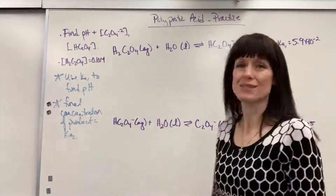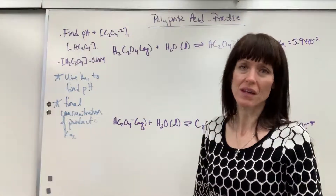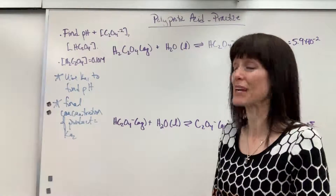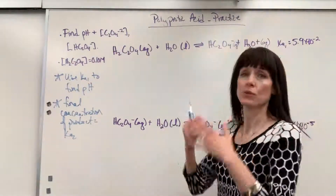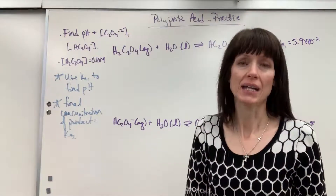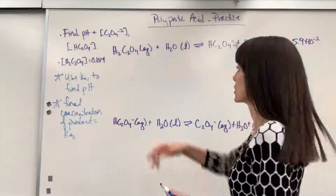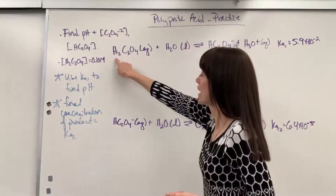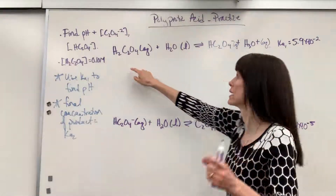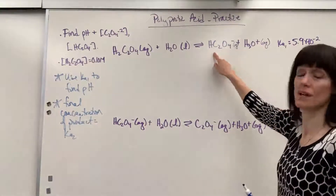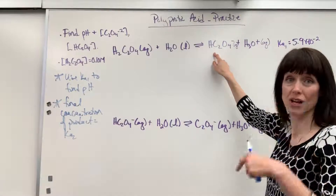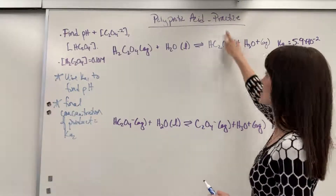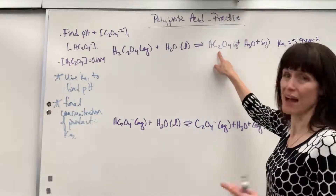Let's start with our ICE table. With polyprotic acids — this is a diprotic since it's losing two hydrogens — they lose hydrogens one at a time, and each hydrogen does its own chemical reaction. Here's going to be my first reaction: that oxalic acid donates one hydrogen, and it will produce the conjugate base, which is hydrogen oxalate, and the hydronium.